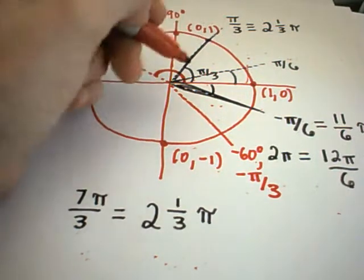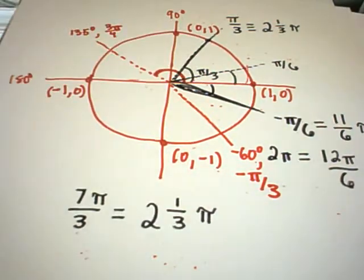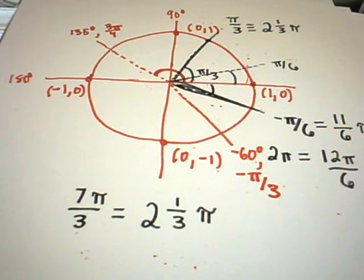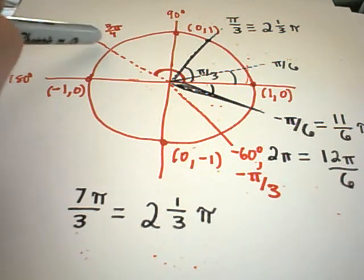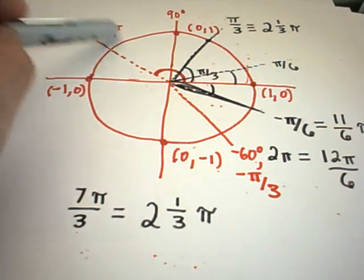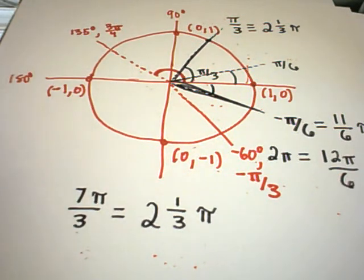Again, sorry for the cluttered graph here a little bit. Hope this stuff makes some sense. I know radians and angles can definitely be pretty confusing. Again, I would say definitely try to practice converting from one to the other, and also finding where they are on the circle. Because we'll definitely use this stuff when we start talking about sine and cosine.